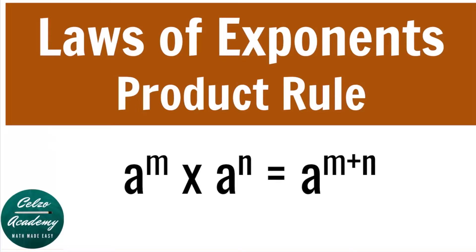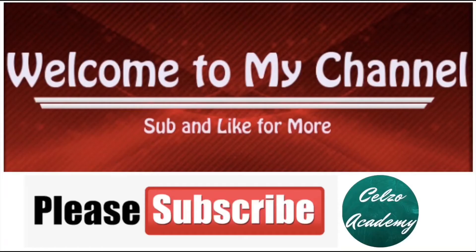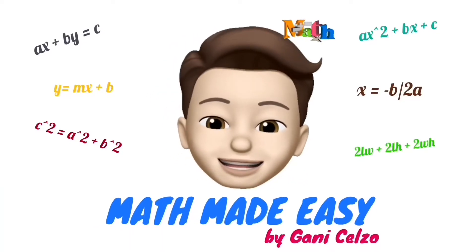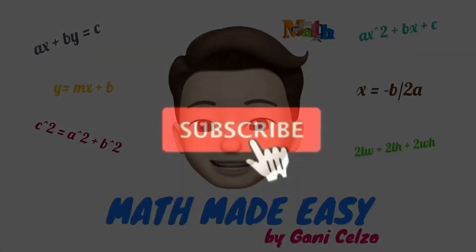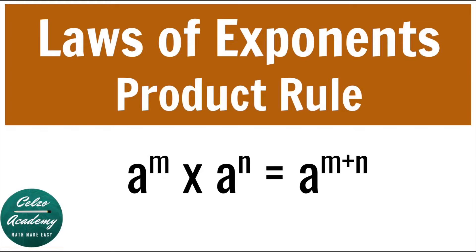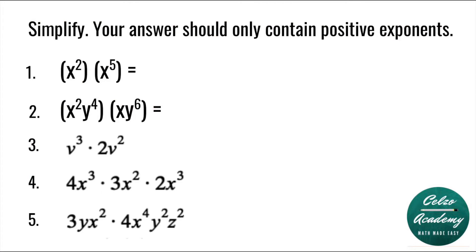Today we're learning the laws of exponents, and the first one is the product rule. When multiplying a to the power of m times a to the power of n, we simply keep the base a and add the exponents m and n. Let's try these five examples. Give it a try and play the video whenever you're ready for the solutions.